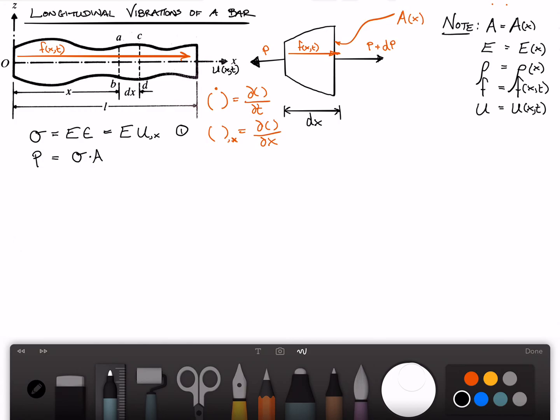So we proceed by using Newton's second law. We start off with the ma term. The mass of that element is equal to rho, the density, times the area, times dx. And the acceleration is just u double dot, d squared u dt squared.